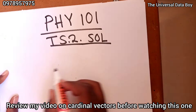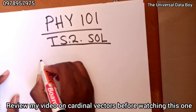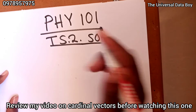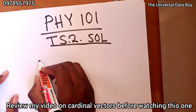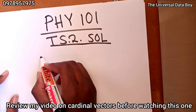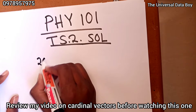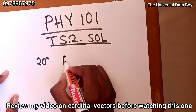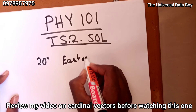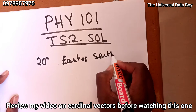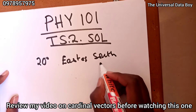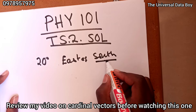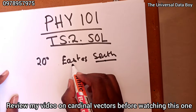Let me just give a brief background of the previous video. When you're given a cardinal vector — cardinals being east, west, north, south — so when you're given a cardinal vector, say maybe 20 degrees east of south, what you do is: the second cardinal direction is where it's coming from, then the first one is where it's going.